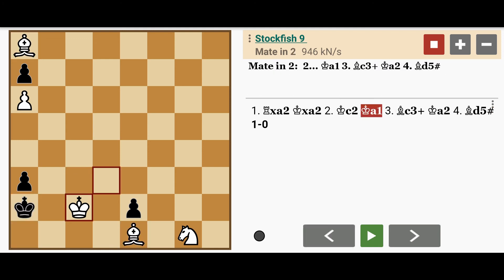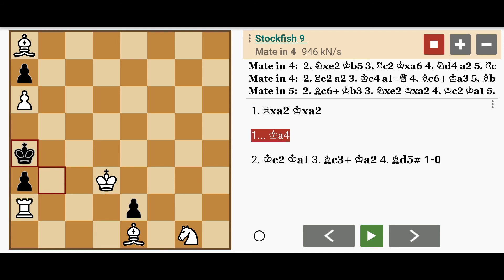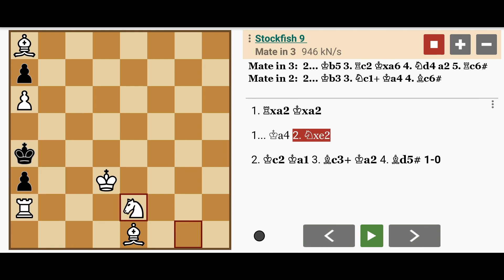So, black can't capture the rook if he wants to last as long as possible. So what does black play? King to a4, trying to escape. White calmly captures the pawn on e2, and now black has the option of moving to b5 or b3.